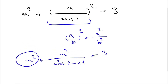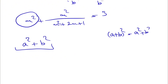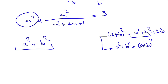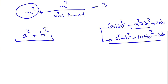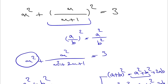If we look at the left side of the equation, we have something like a² + b². We know that (a + b)² = a² + b² + 2ab, so we can build a² + b² as (a + b)² − 2ab. We also have (a − b)² = a² + b² − 2ab, so a² + b² = (a − b)² + 2ab.